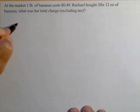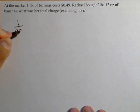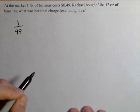We know that one pound of bananas costs 49 cents, so we'll just do it in pounds and cents, and we'll convert at the end.